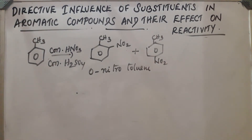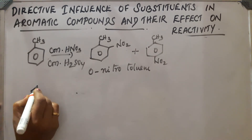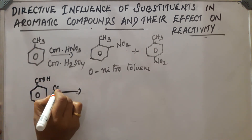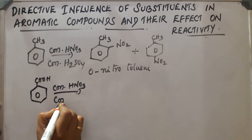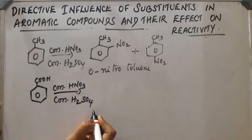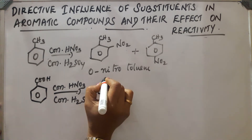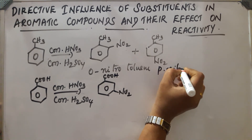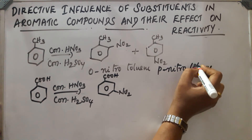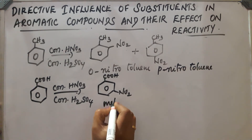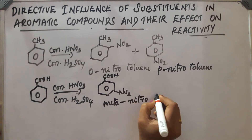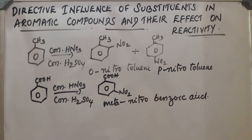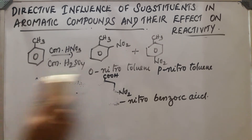For a meta-directing example, take benzoic acid (–COOH). Benzoic acid on reaction with concentrated nitric acid and concentrated H2SO4 gives meta-nitrobenzoic acid as the product, since –COOH is a meta-directing group.